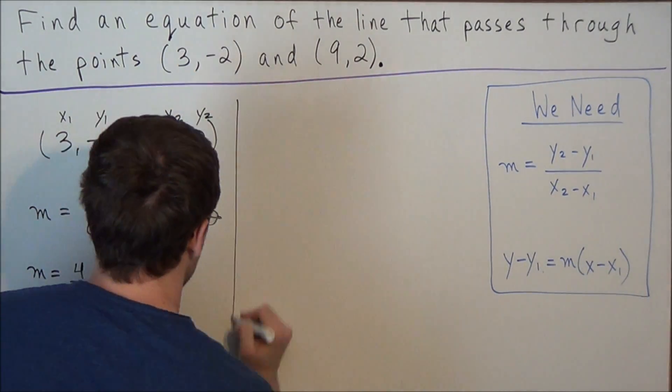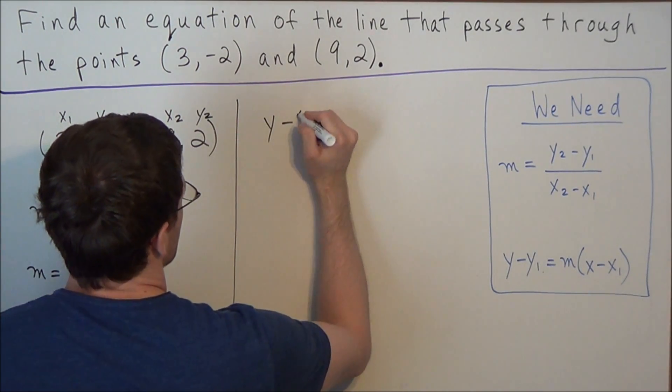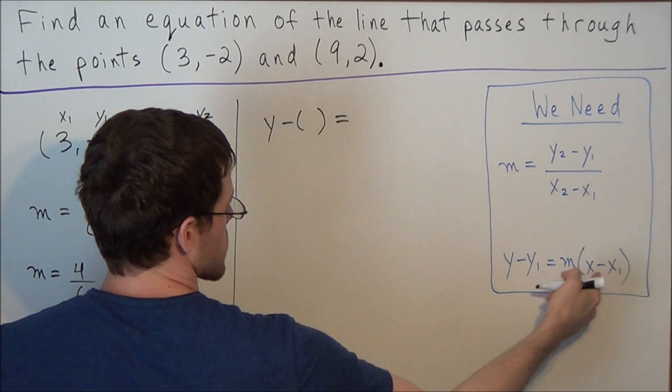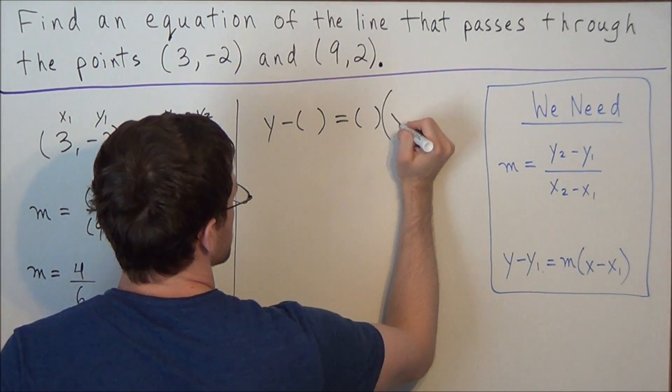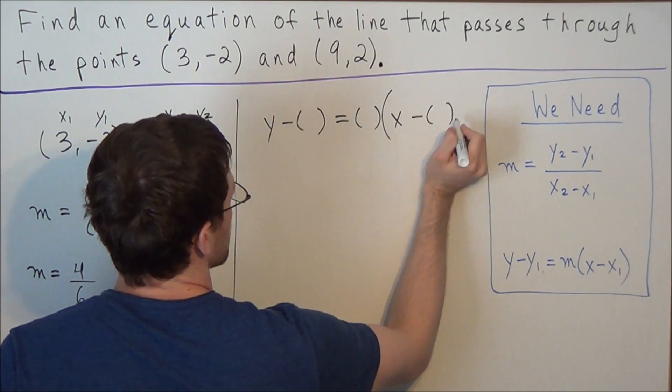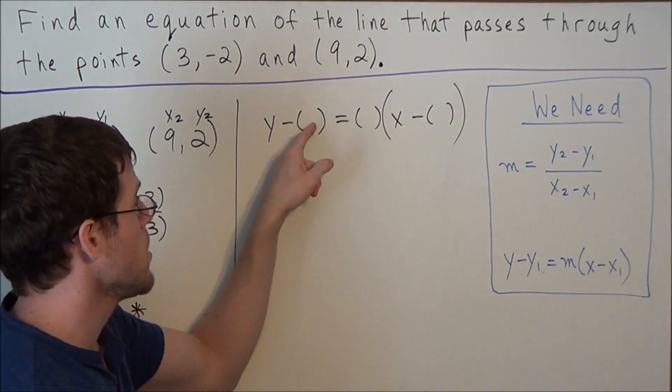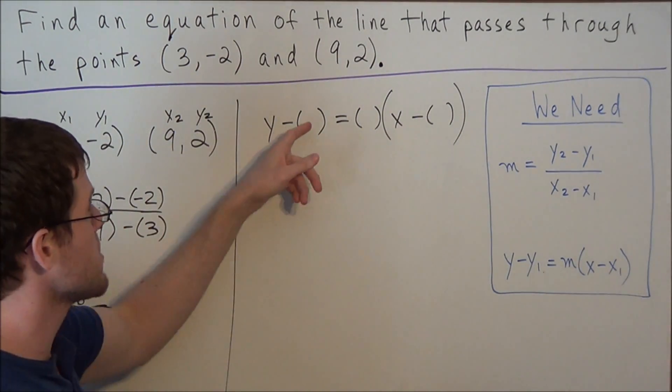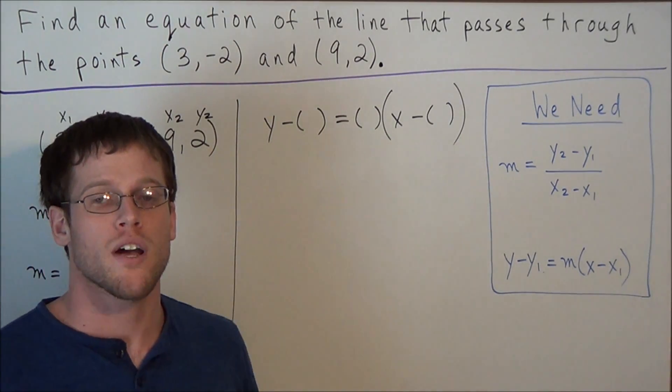So for the next part, we could set ourselves up with the point-slope-form equation. But what I'm going to do is I'm going to leave out m, x1, and y1, and replace them with a blank pair of parentheses. So all I did was swap out x1, m, and y1 with blank parentheses. And the reason I do this is it helps avoid common sign errors that may happen when you subtract negatives. That way you could keep track of all your signs.